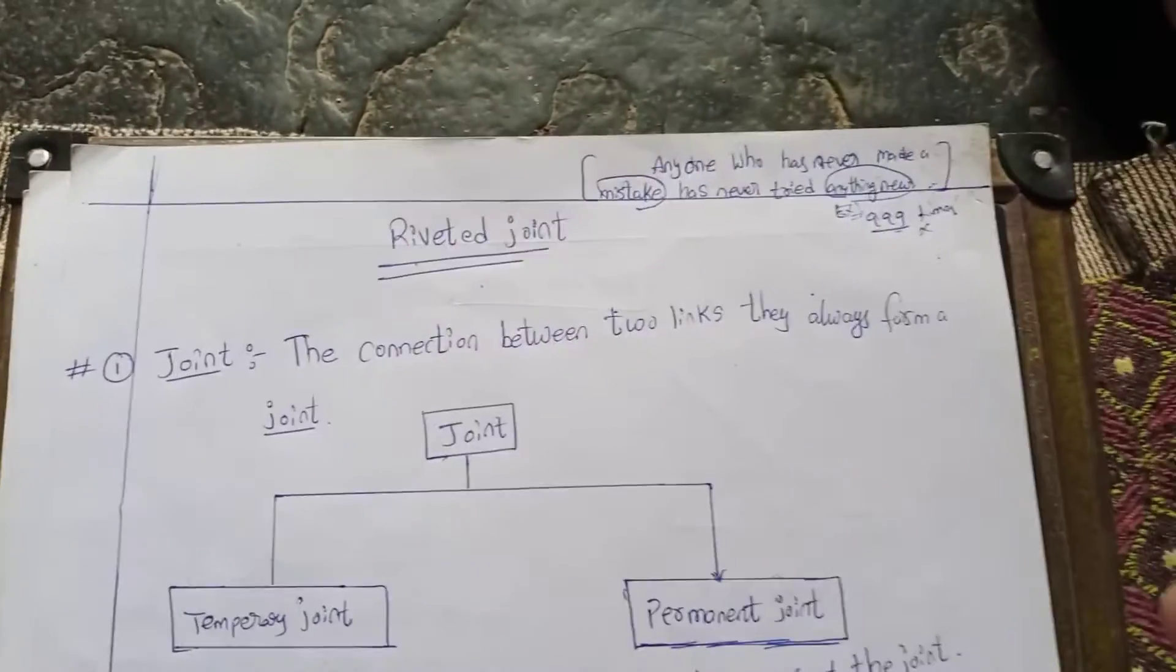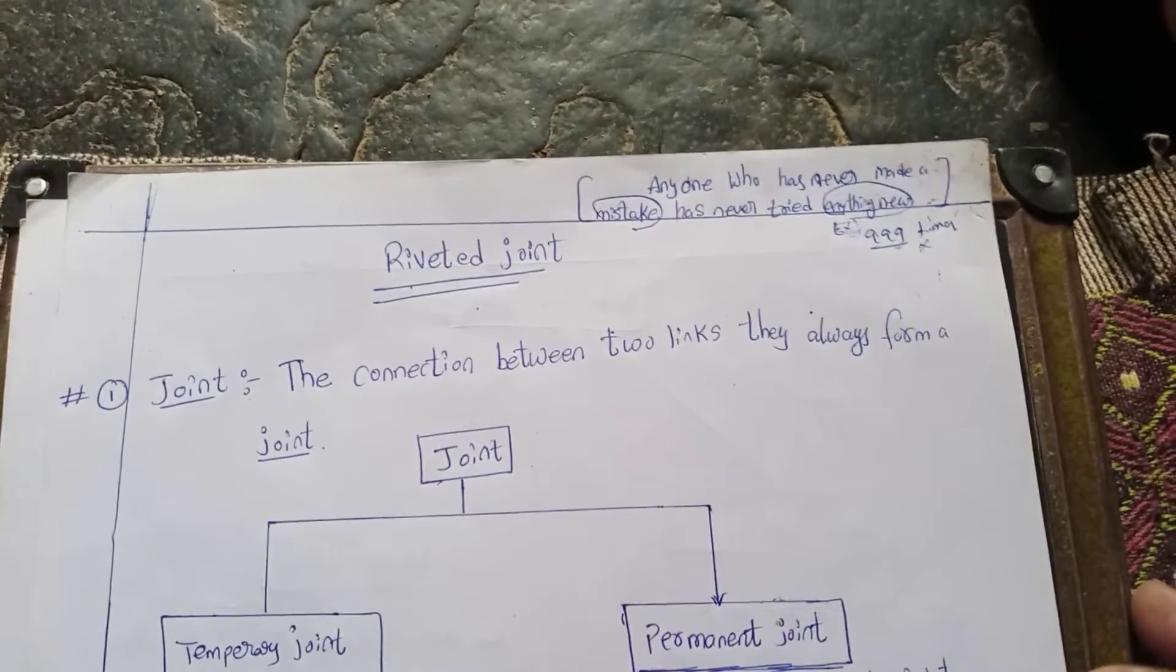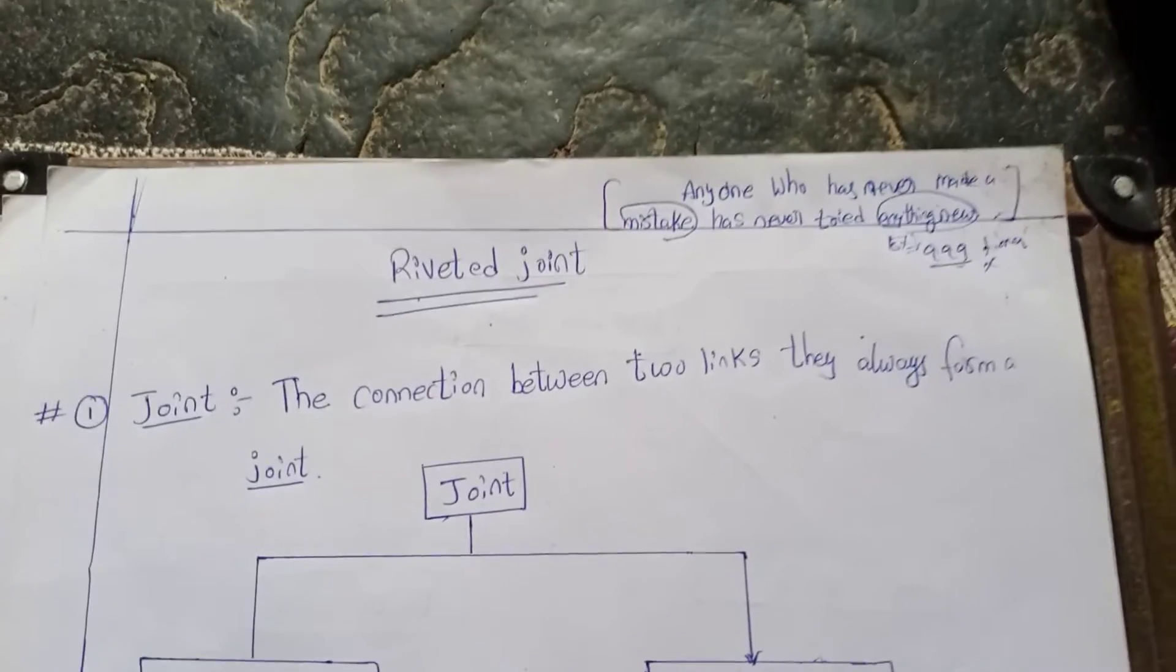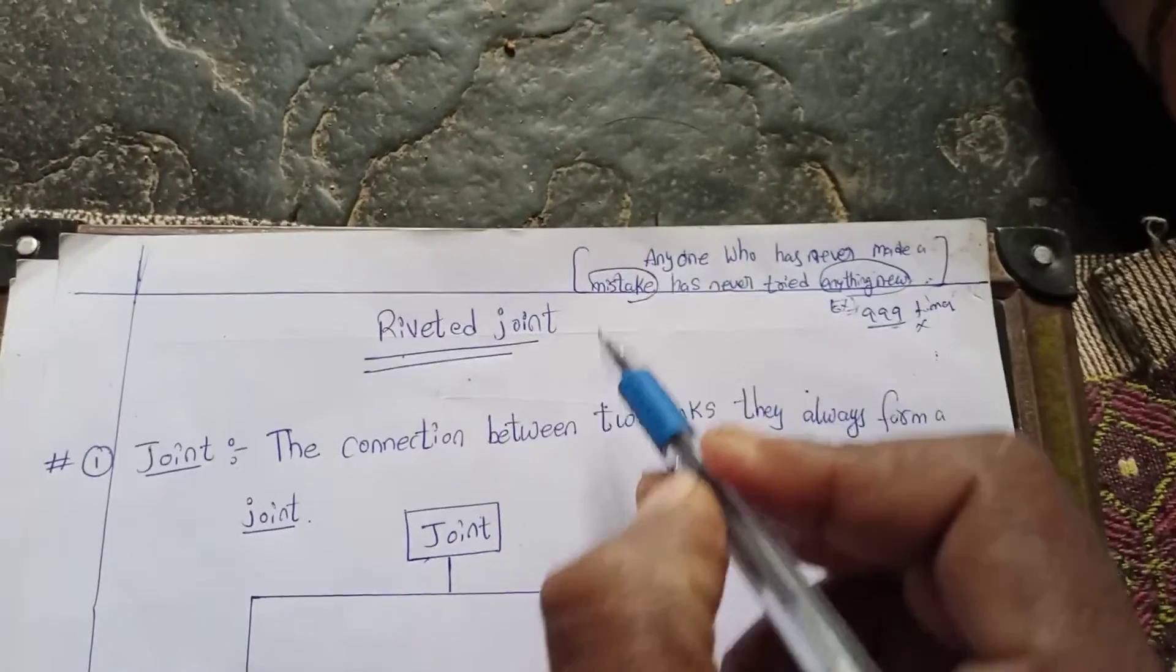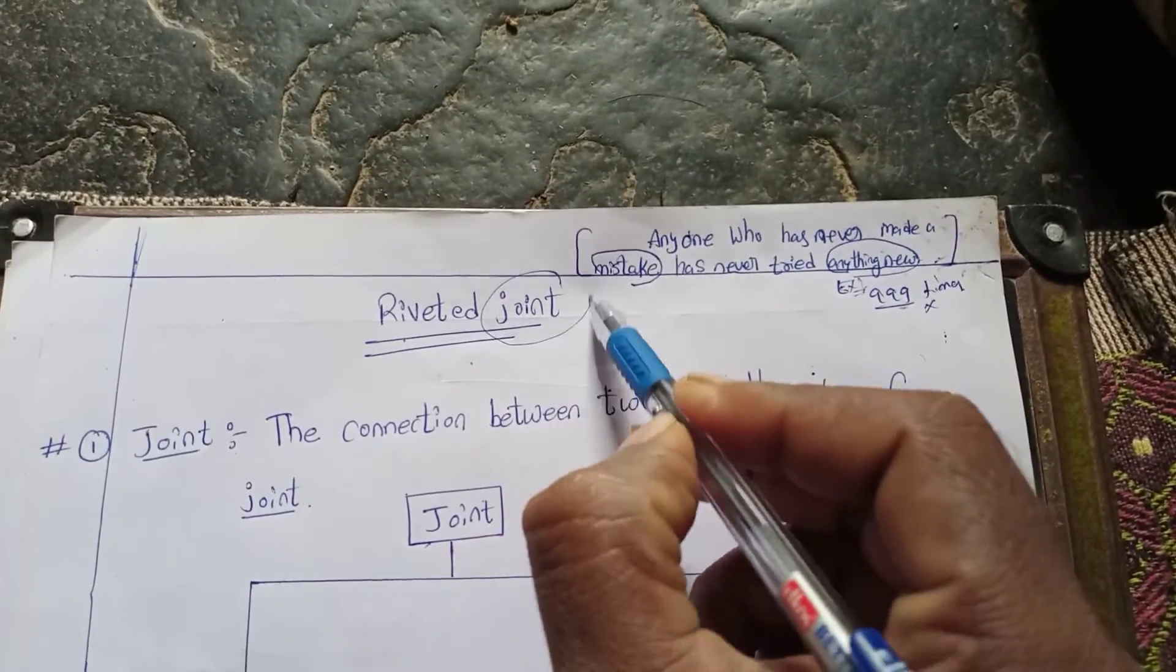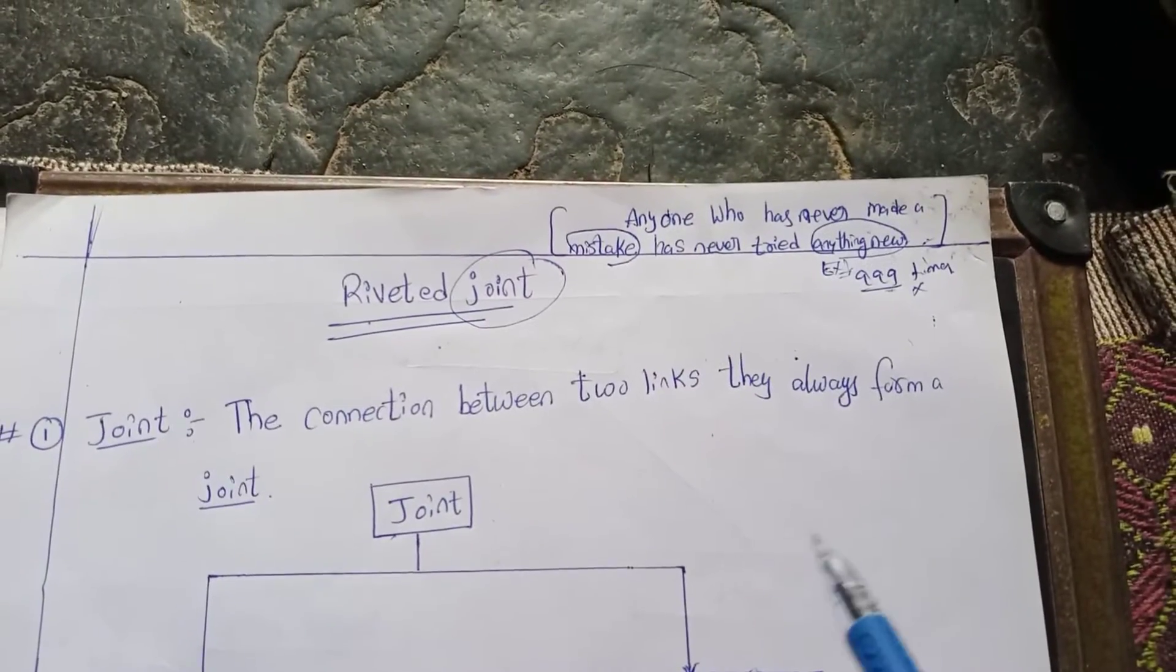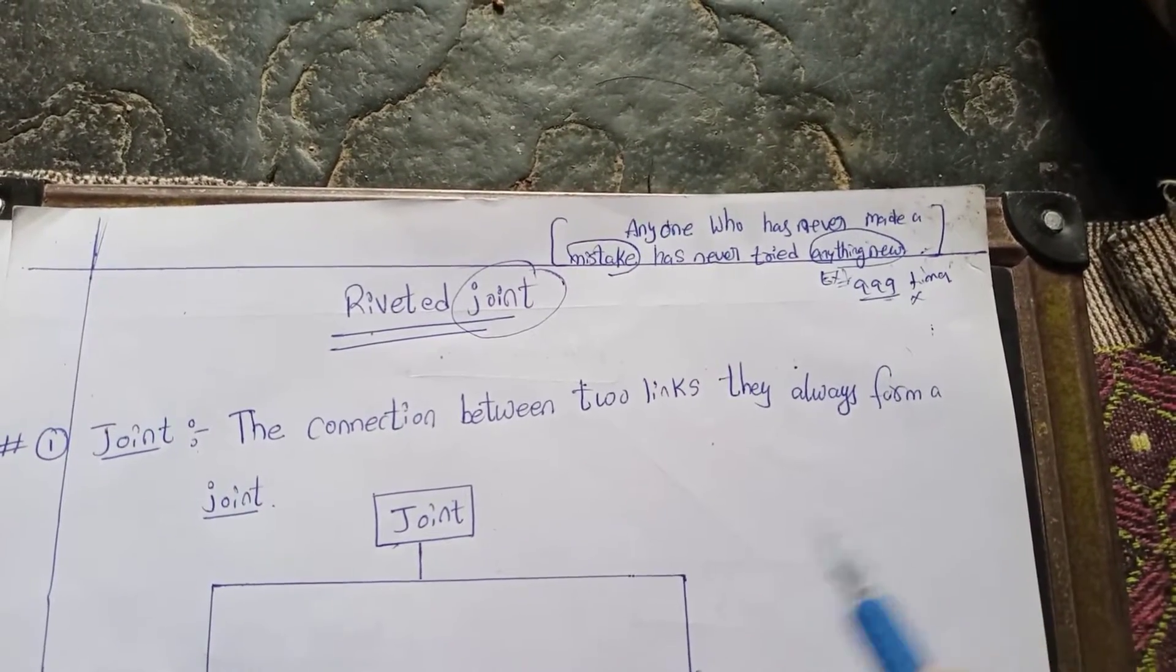Today our topic is about the riveted joint. First of all, what is a joint? The connection between two links, they always form a joint.